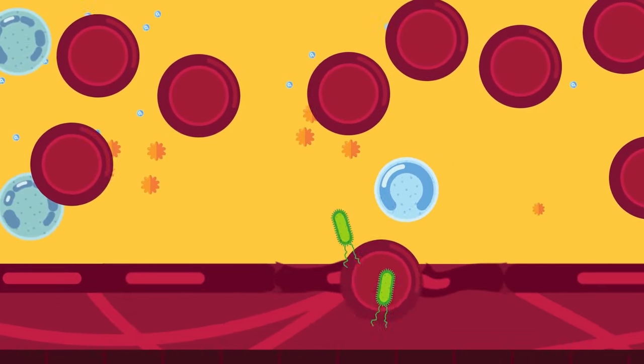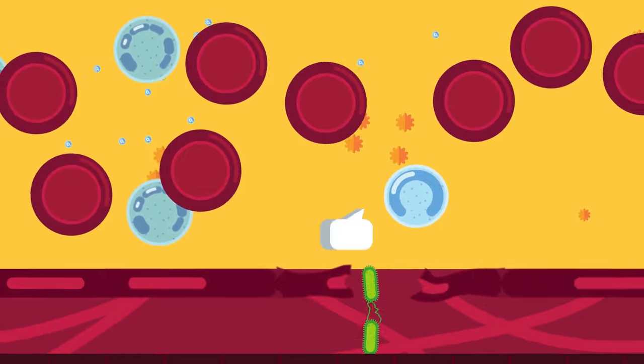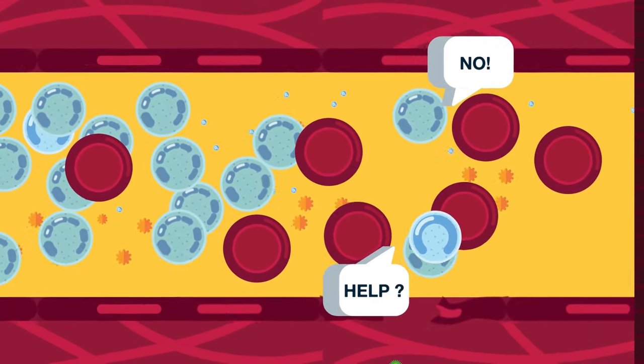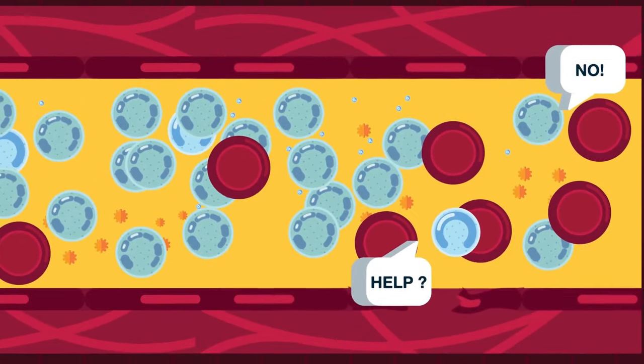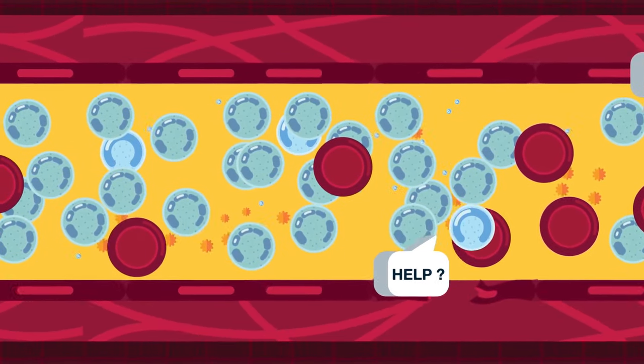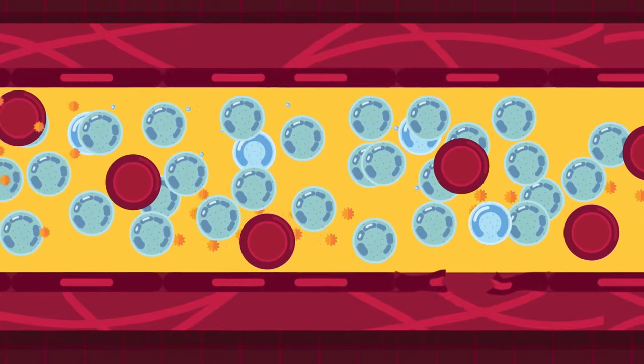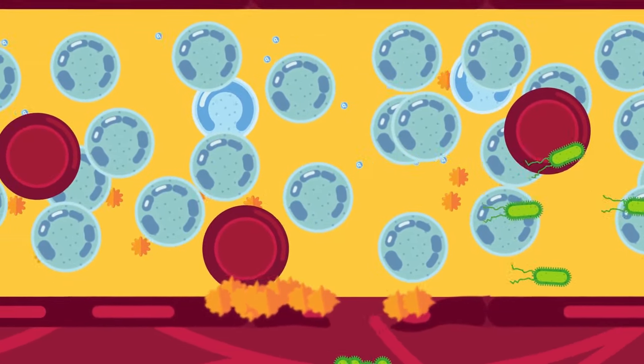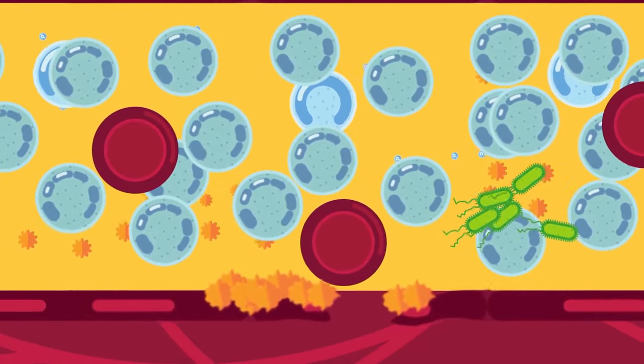However, the abnormal cells in leukemia do not function in the same way as normal white blood cells. The leukemia cells continue to grow and divide, eventually crowding out the normal blood cells. The end result is that it becomes difficult for the body to fight infections, control bleeding and transport oxygen.